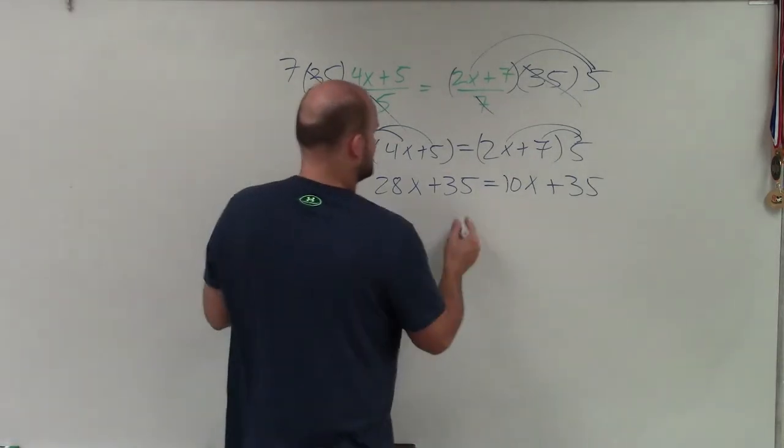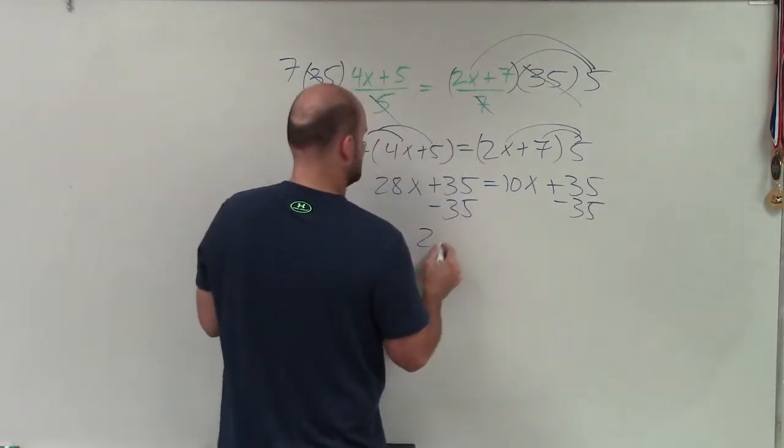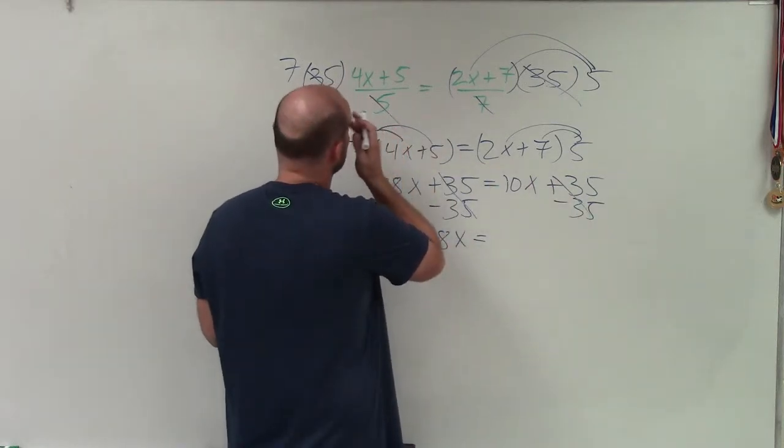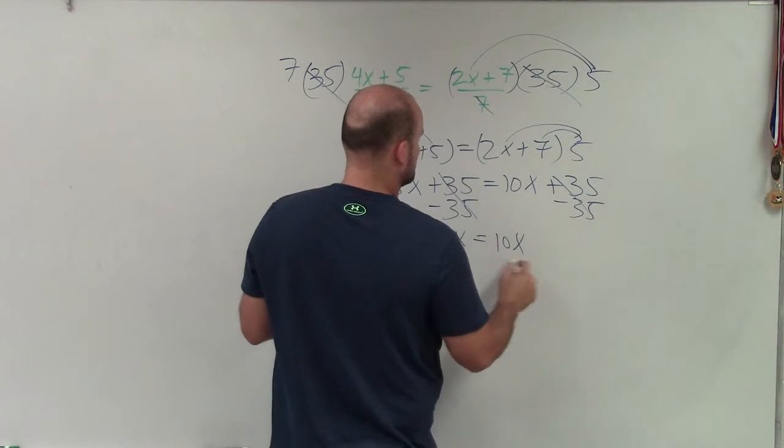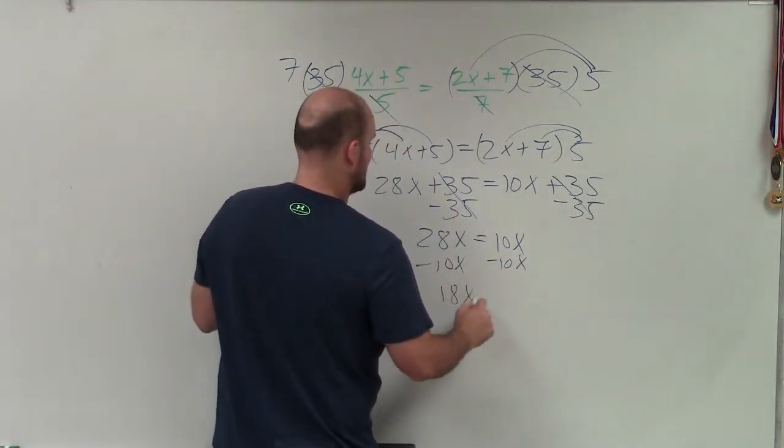Then I go ahead and solve. So I subtract 35, subtract 35. I have 28x is equal to, that divides on both sides. So now I'm at 28x equals 10x. Subtract 10x. Subtract 10x. I have 18x equals 0.